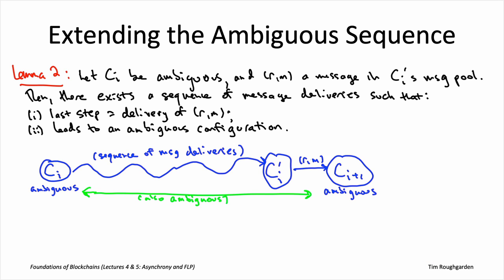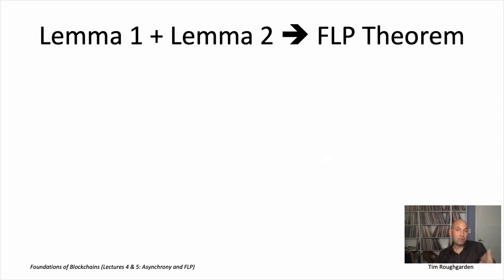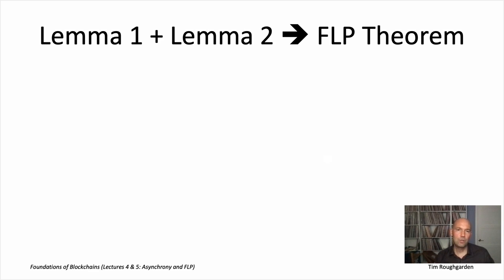Taking lemma two on faith for now, let's see how lemma one and lemma two work together as a team to prove FLP impossibility. The intuition is clear: invoke lemma one to get started, then invoke lemma two over and over to extend the sequence. But there is a subtle point about eventual message delivery, so let's see exactly how that works.